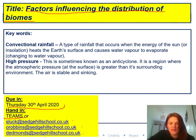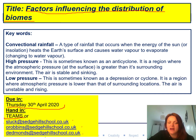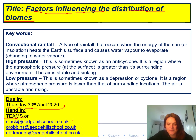High pressure — sometimes known as an anticyclone — is a region where the atmospheric pressure at the surface is greater than its surrounding environment. The air is stable and sinking. Low pressure — sometimes known as a depression or a cyclone — is a region where atmospheric pressure is lower than the surrounding locations. The air is unstable and rising. These are quite complicated words, but we'll go over them as the lesson goes on.